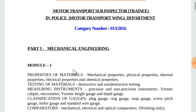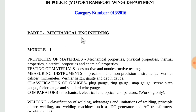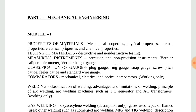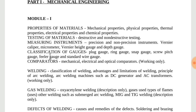The main topic is Module 1 on Mechanical Engineering, containing properties of materials and testing of materials. Measuring instruments include precision and non-precision instruments: Vernier caliper, micrometer, Vernier height gauge, and depth gauge. Then classification of gauges: plug gauge, ring gauge, snap gauge, screw pitch gauge, feeler gauge, and standard wire gauge. Then comparators.